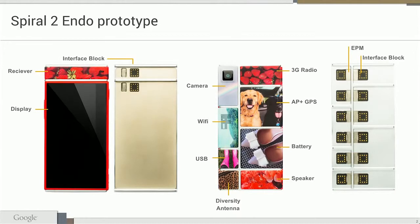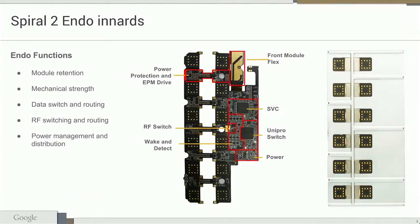We didn't like those designs because we want to celebrate the modularity. We want the user to feel the modules. We want to give module developers access to real estate on the outside of the phone and allow the user to really make their own phone, rather than just customizing it. The purpose of the endo is to unify all the modules together and make them into a single device.